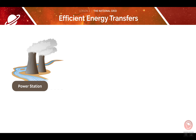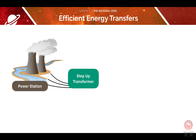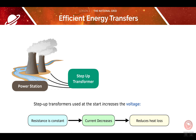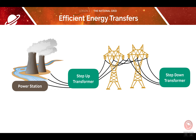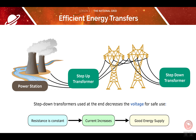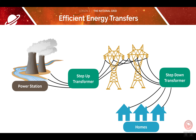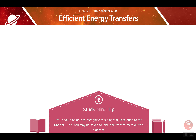Let's look at the transfer from a power station. From the diagram, you can see that there is a step-up transformer as the electricity leaves the power station. This will increase the voltage for safe transmission. Then, a step-down transformer will be used once the electricity reaches our homes, making the voltage safe for use again. You should be able to recognise this diagram in relation to the national grid, as you may be asked to label the transformers. These transformers allow for an efficient energy transfer.